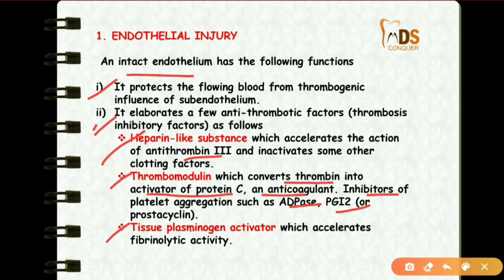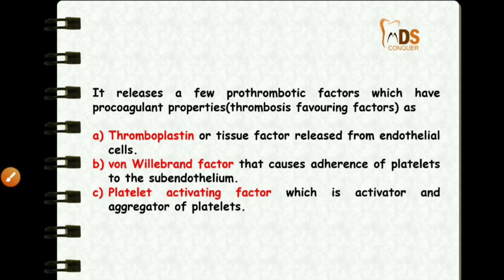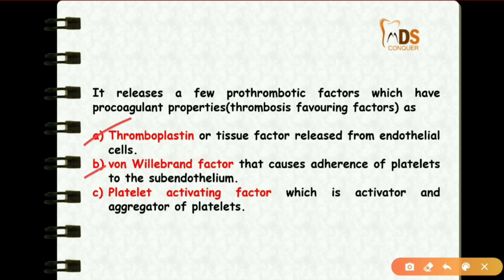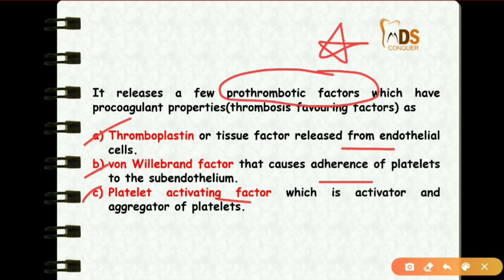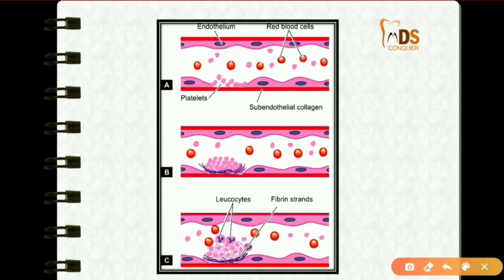Additional protective mechanisms include inhibitors of platelet aggregation such as ADPase and PGI2 (prostacyclin), and tissue plasminogen activator which accelerates fibrinolysis — that is, clot lysis activity. There are also prothrombotic factors released by procoagulant properties: thromboplastin, von Willebrand factor, and platelet activating factor.